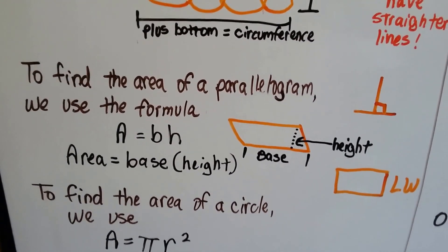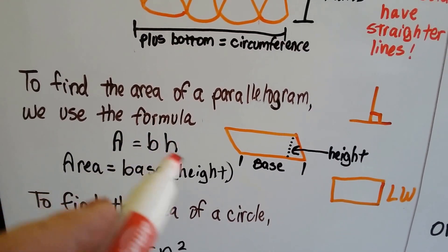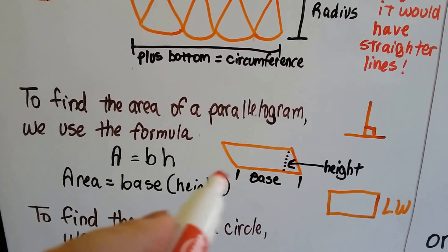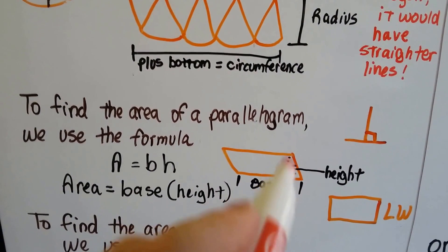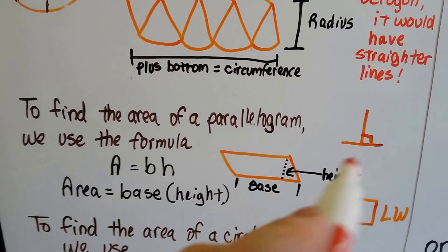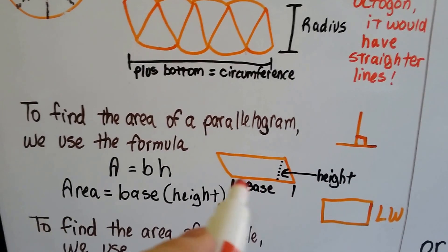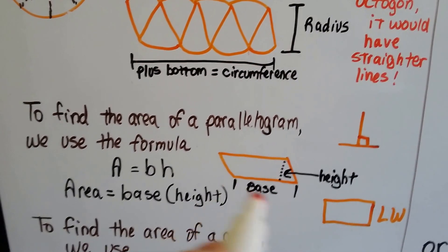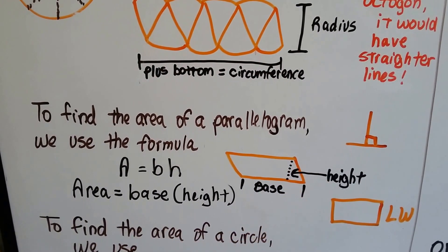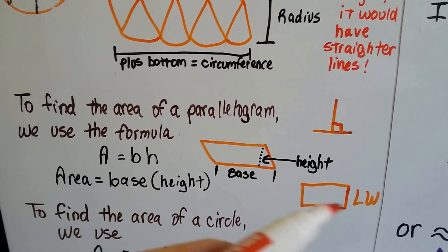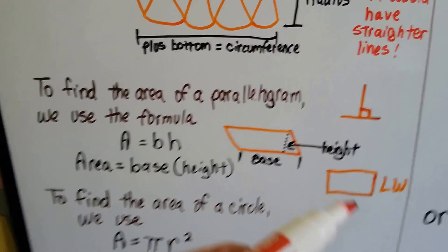To find the area of a parallelogram, we use the formula area equals base times height. We take the measure of this base and the measure of the height, and remember the height would have to be perpendicular, not this slant. It goes straight up on a 90 degree angle. If we multiply the measure of this base times the measure of the height, that will give us the area of a parallelogram.